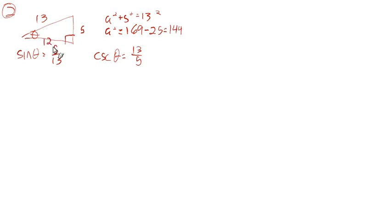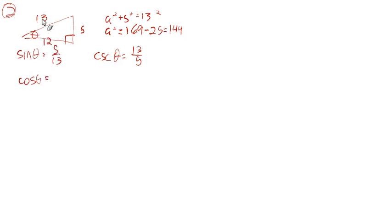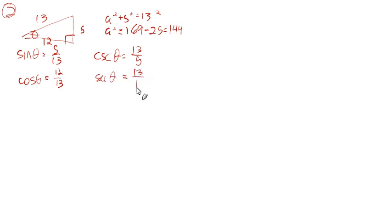Now we have the value of the adjacent side. So we could go with cosine or any other value now. The cosine would be adjacent over hypotenuse — it would be 12 over 13. Once you find the cosine, you could go right to the secant, because it's just the reciprocal. That's 13 over 12.